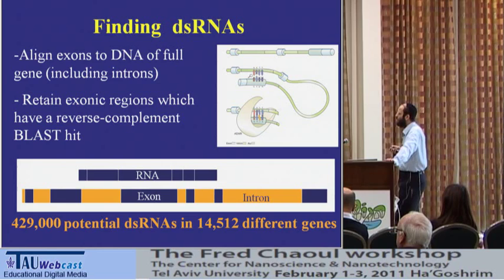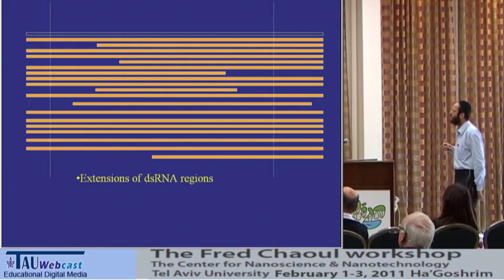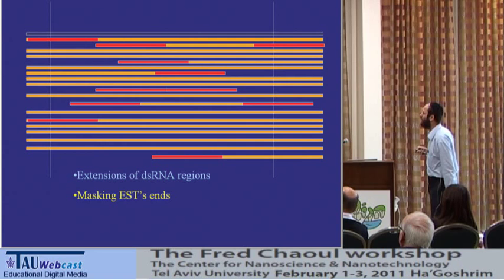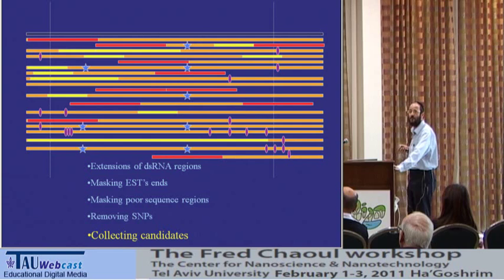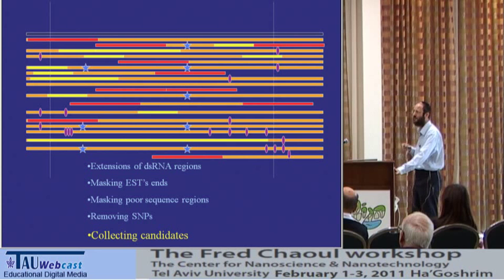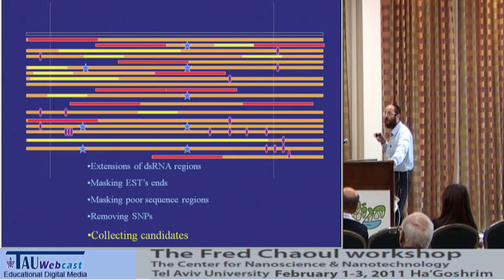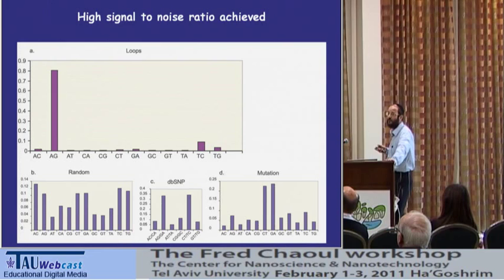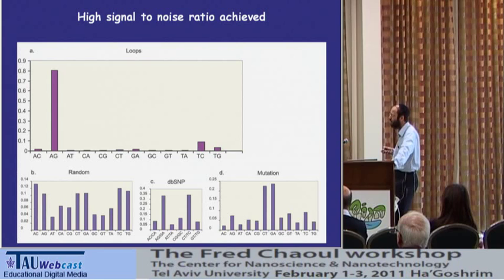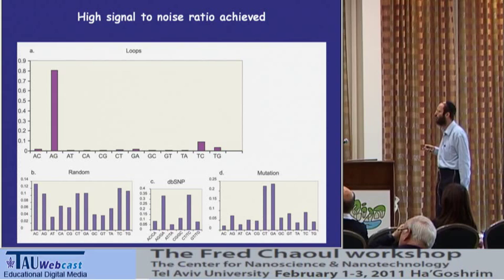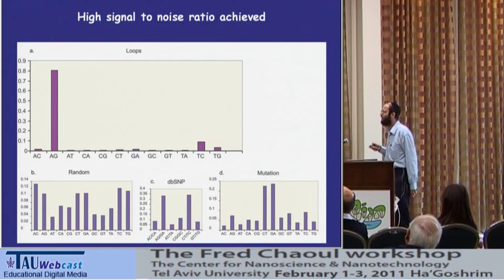We took these regions that are potentially double-stranded RNAs, performed filtering, removed the known polymorphic sites, and collected the remaining mismatches — the remaining disagreements between RNA sequences and DNA sequences. When we do all this filtering and focus only on double-stranded RNA sites, we get a distribution of mismatches where almost all of them are of the A-to-G type. For comparison, random parts of the genome show a roughly uniform distribution of mismatch types from polymorphic sites, but after all the filtering, we are left only with A-to-G editing sites.